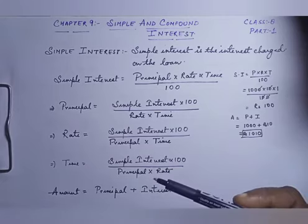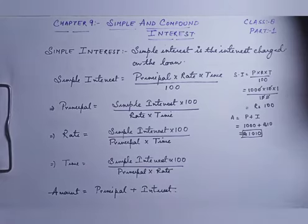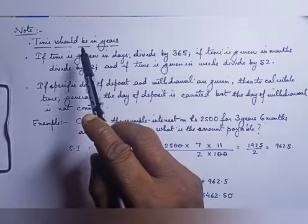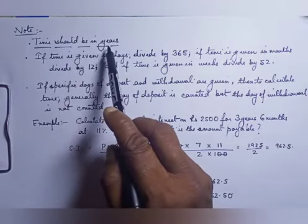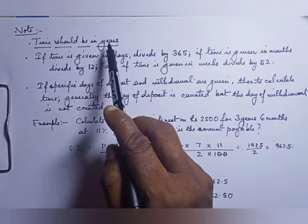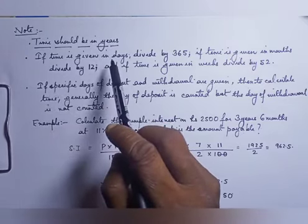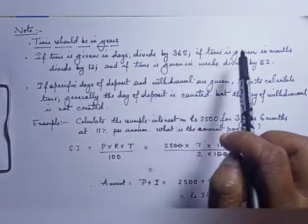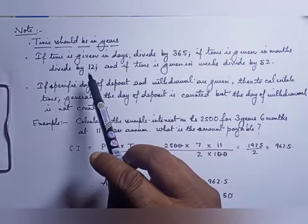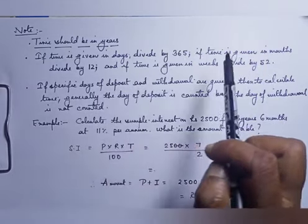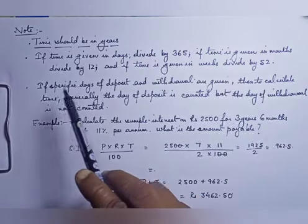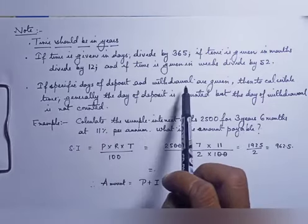I hope all the formulas are very clear to everyone. There are certain things to keep in mind while using the formula. Firstly, time should be given in years. If time is given in days, divide it by 365. If time is given in months, divide it by 12. If time is given in weeks, divide it by 52.